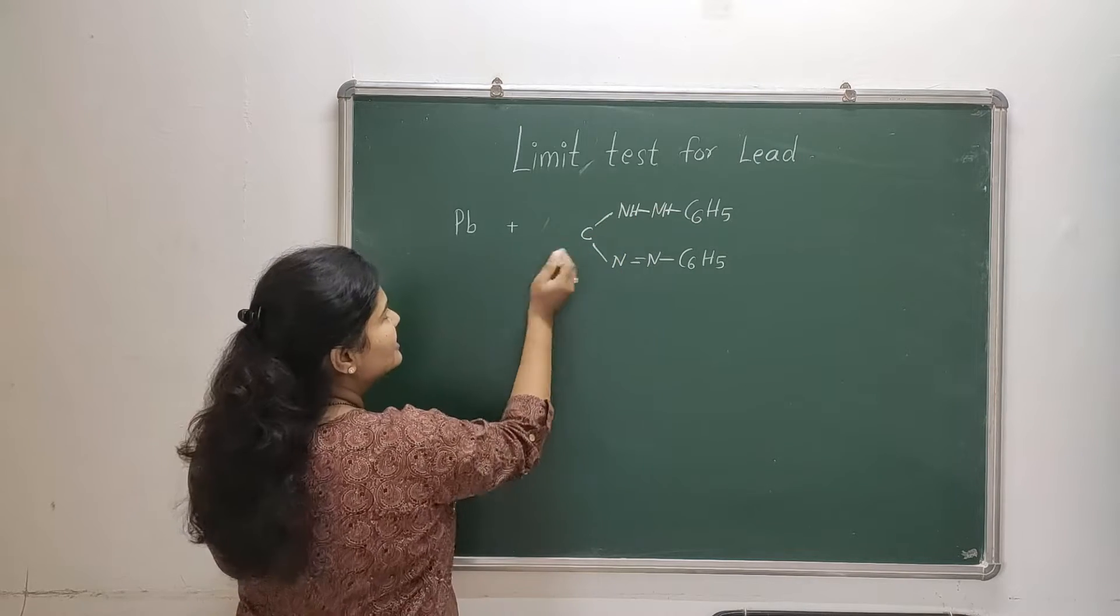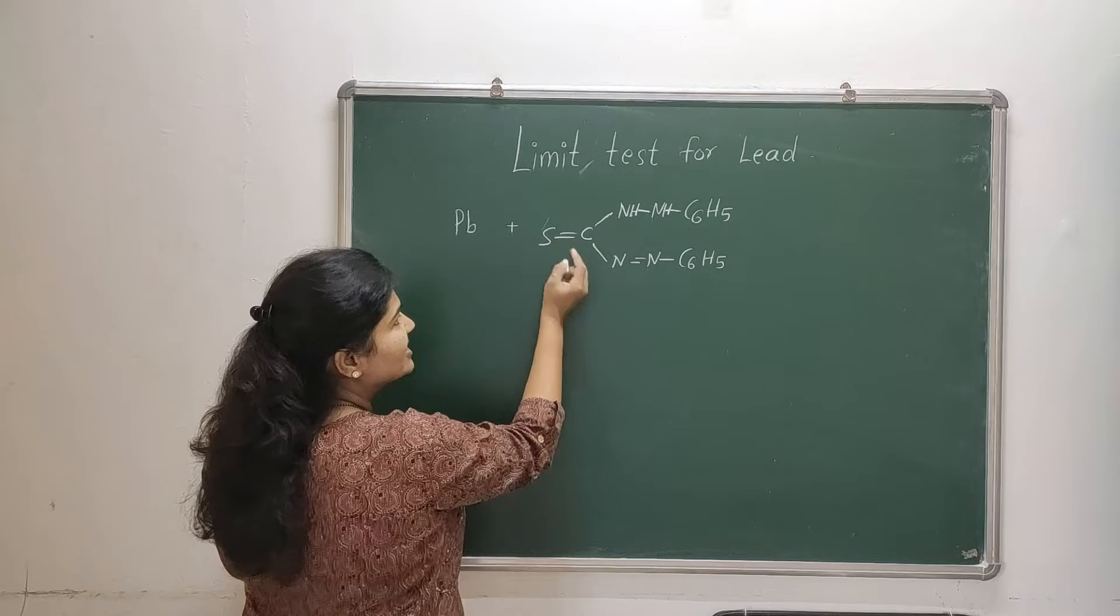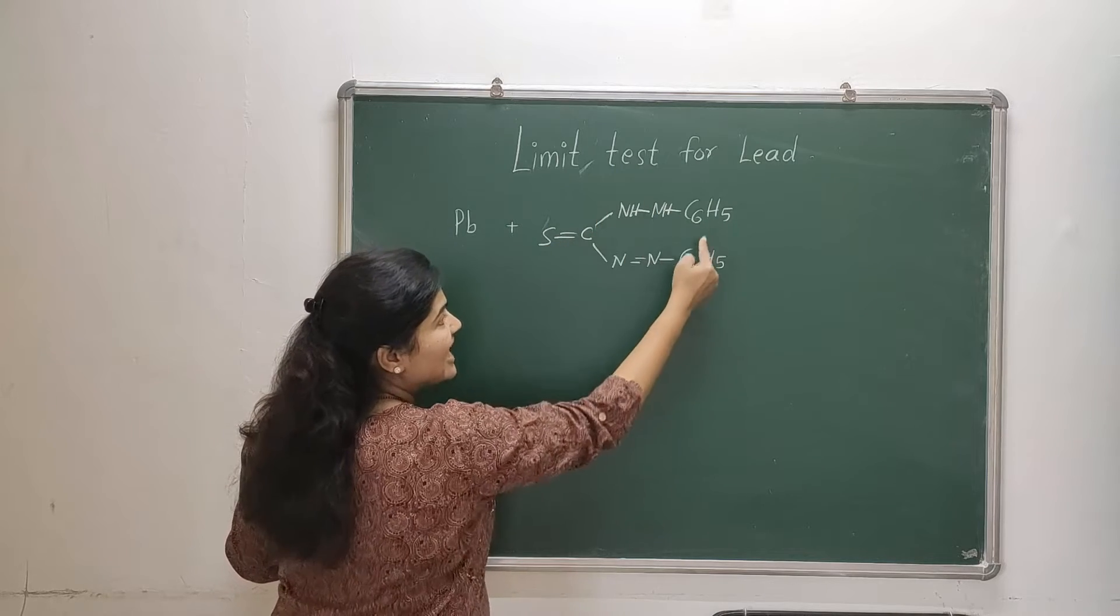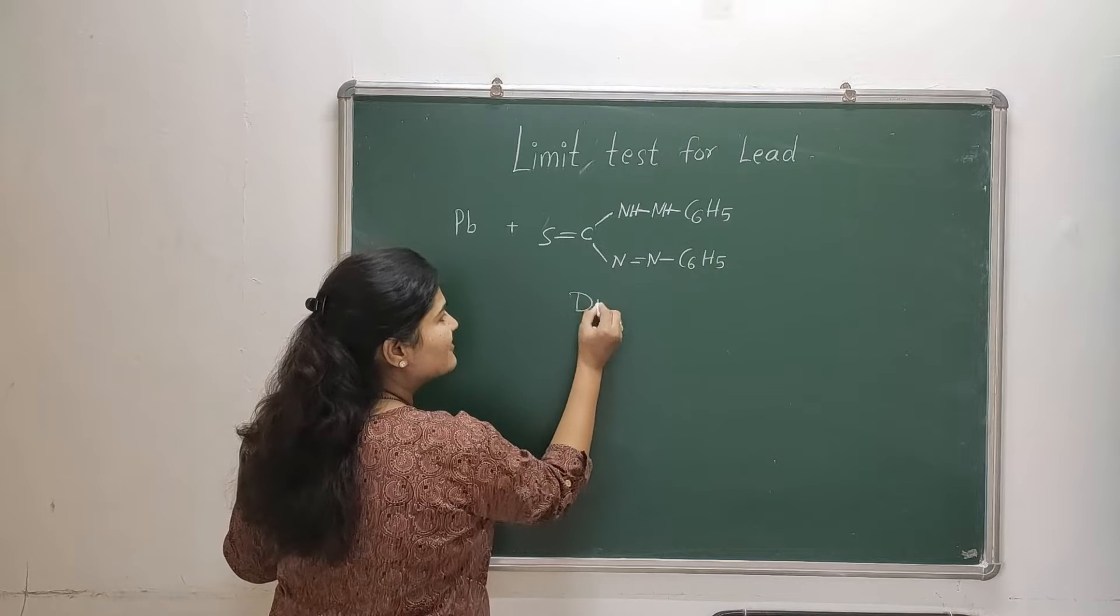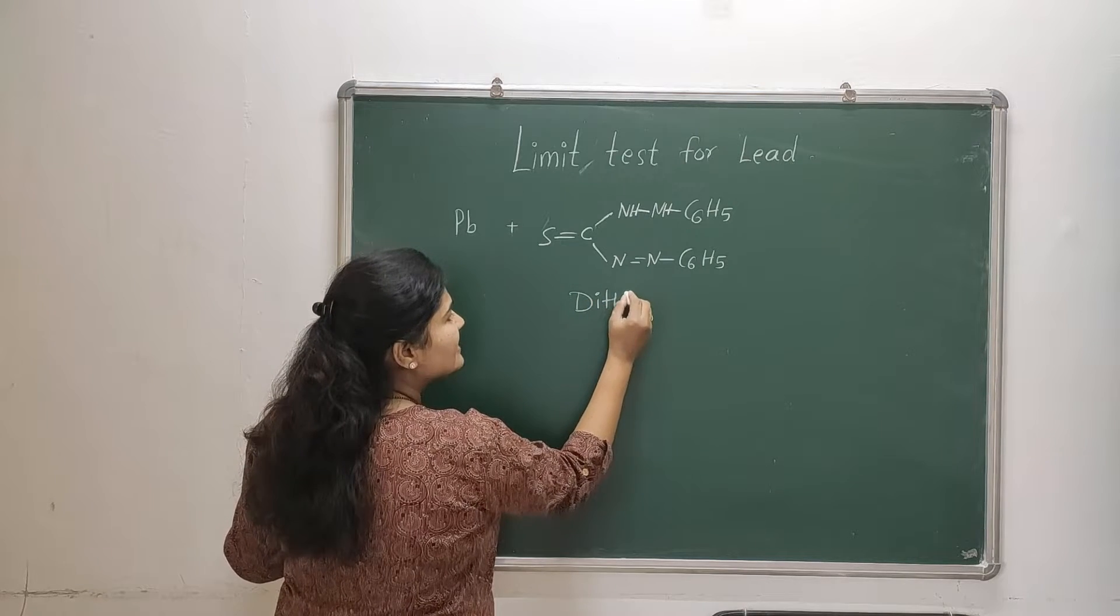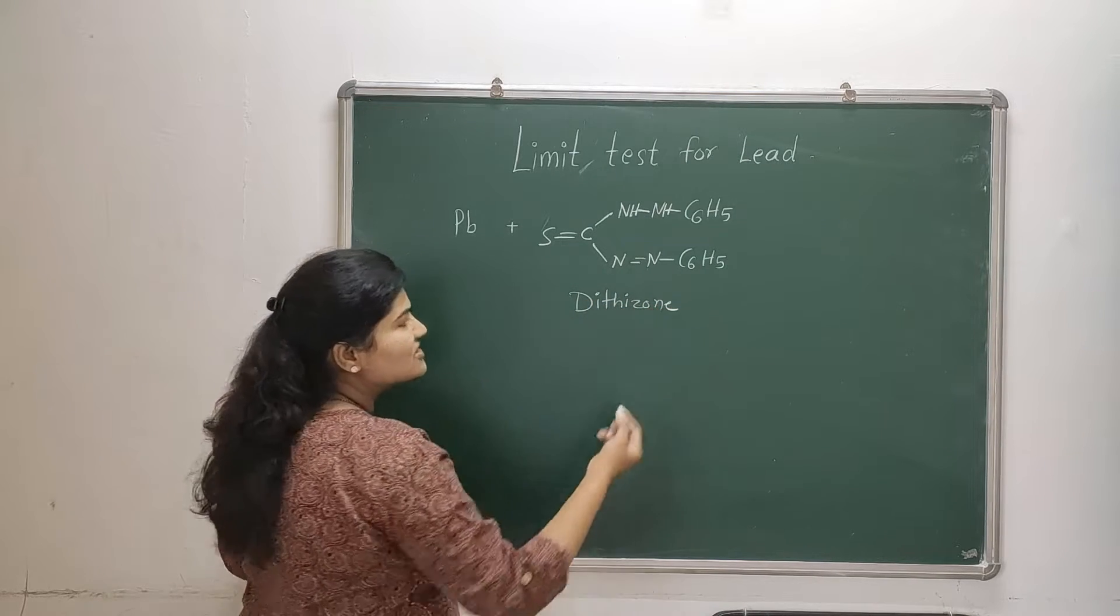And double bond sulfur - thiocarbazone. Diphenyl thiocarbazone. This is also referred as dithizone. So this is going to be the reagent of choice for the limit test for lead.